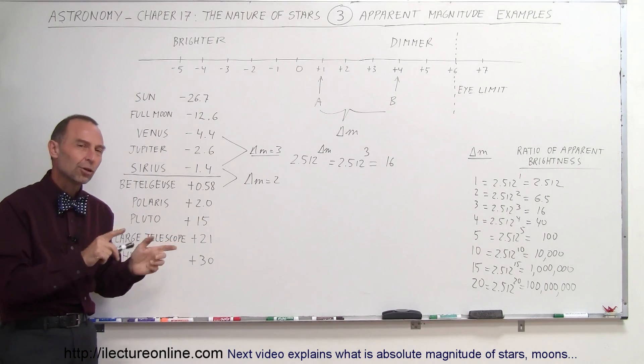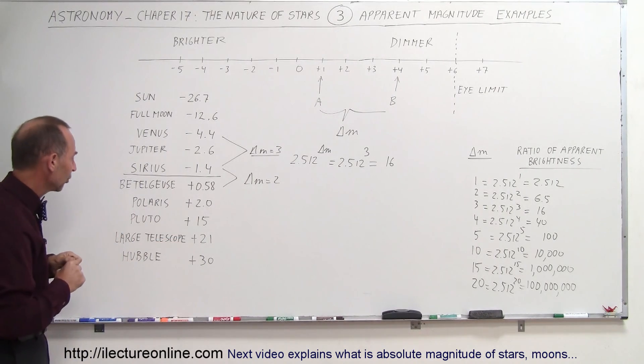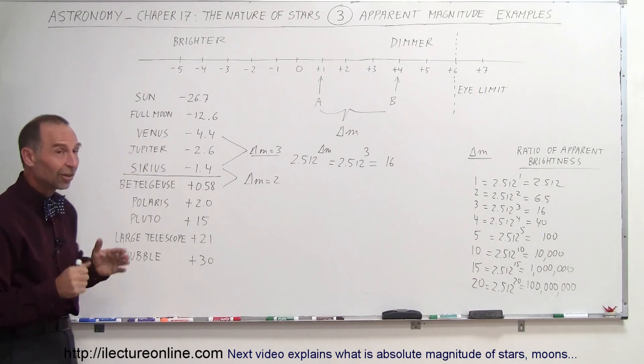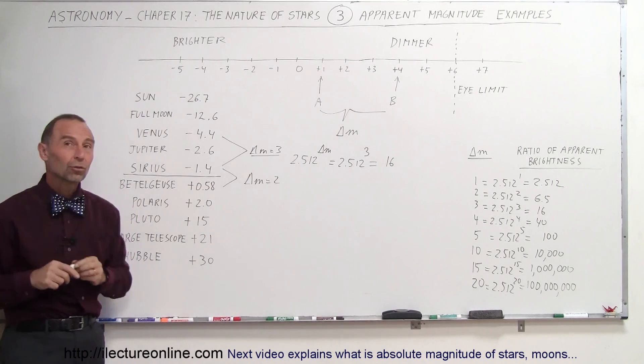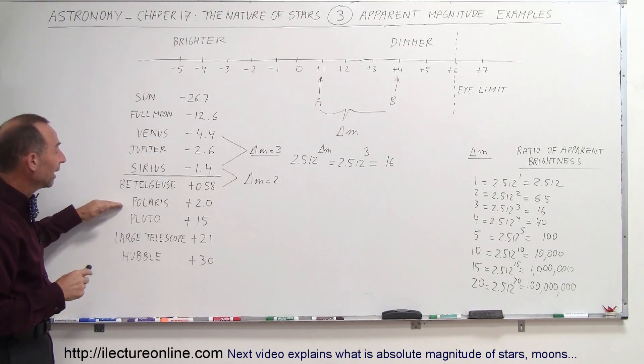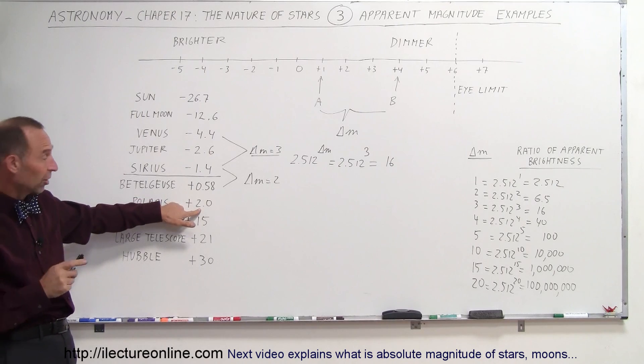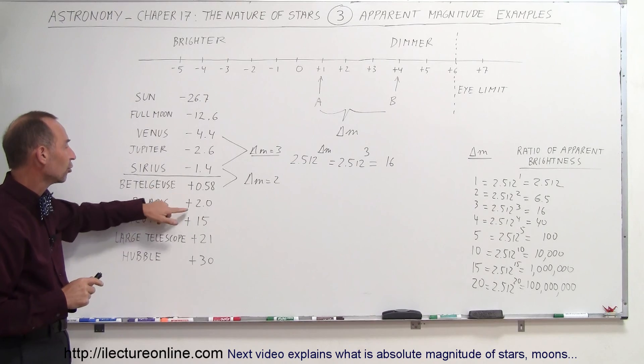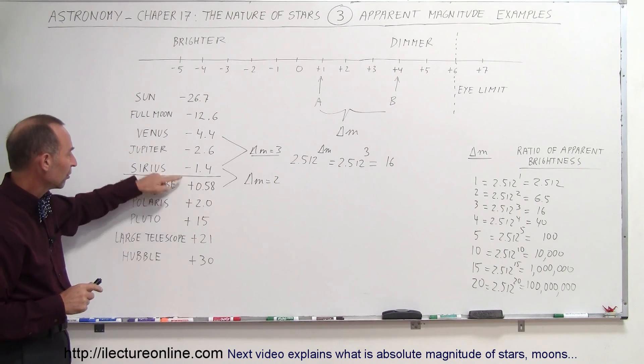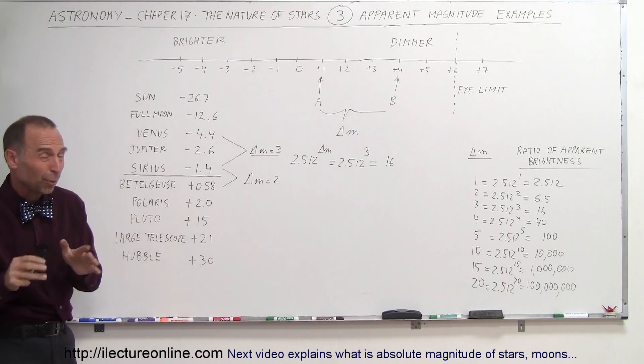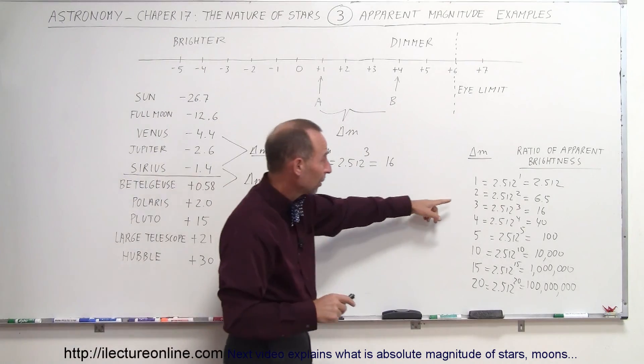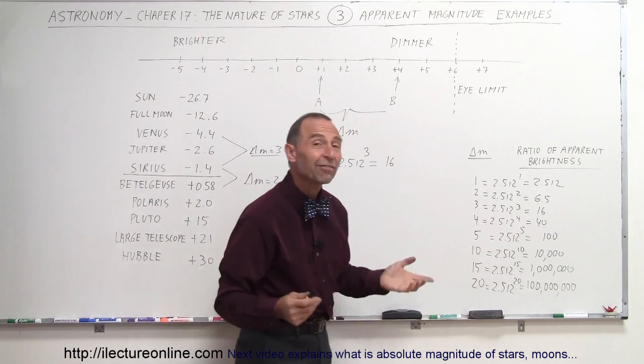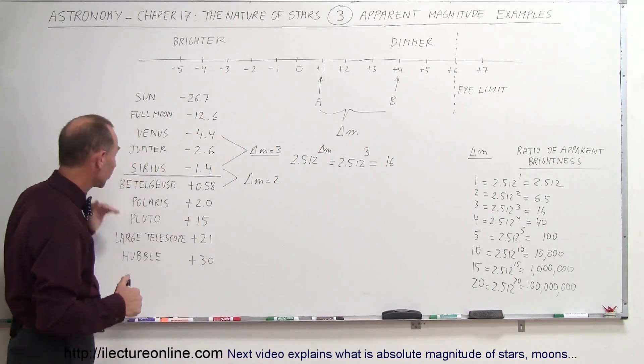In a later video we'll show you something about absolute magnitude. Polaris is that star that always is pointed really close to the north and it is a fairly bright star at plus 2.0, of course not nearly as bright as Sirius or Betelgeuse. Notice that the difference between Sirius and Polaris is about 3.4. That puts it somewhere around maybe 25 times brighter, so for Sirius compared to Polaris.